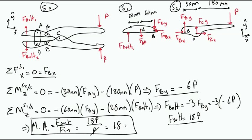We find that the mechanical advantage of the plier is equal to 18P over the input force of P, which tells us that the force felt by the bolt will be 18 times greater than the force applied by our hand.